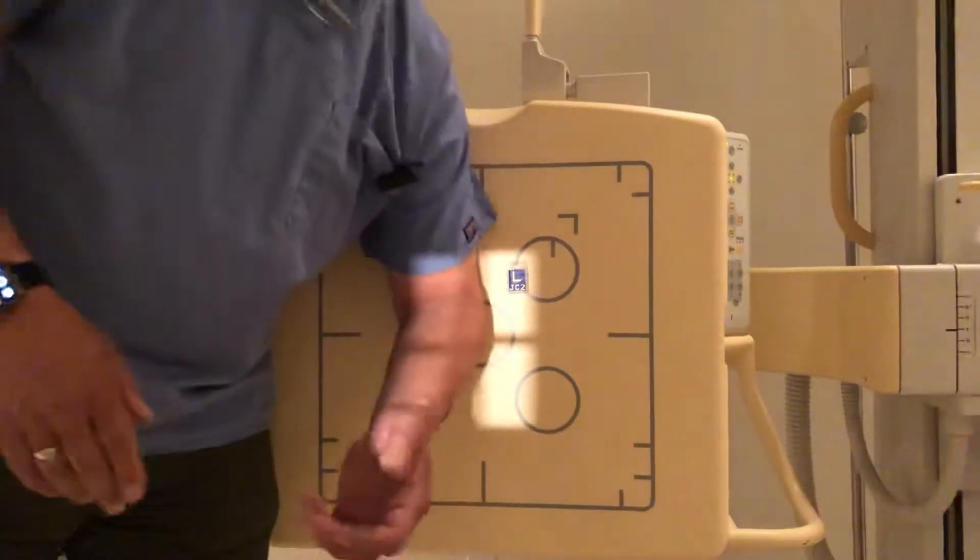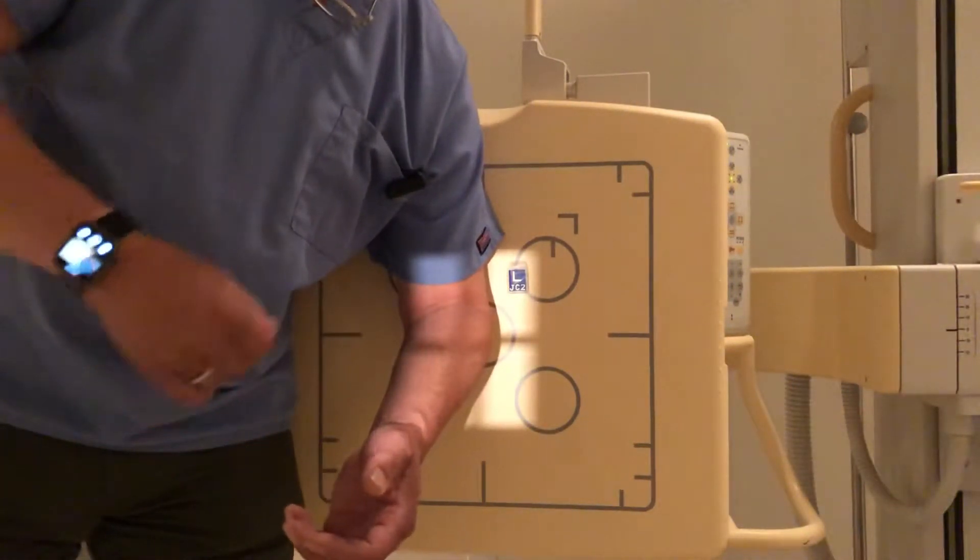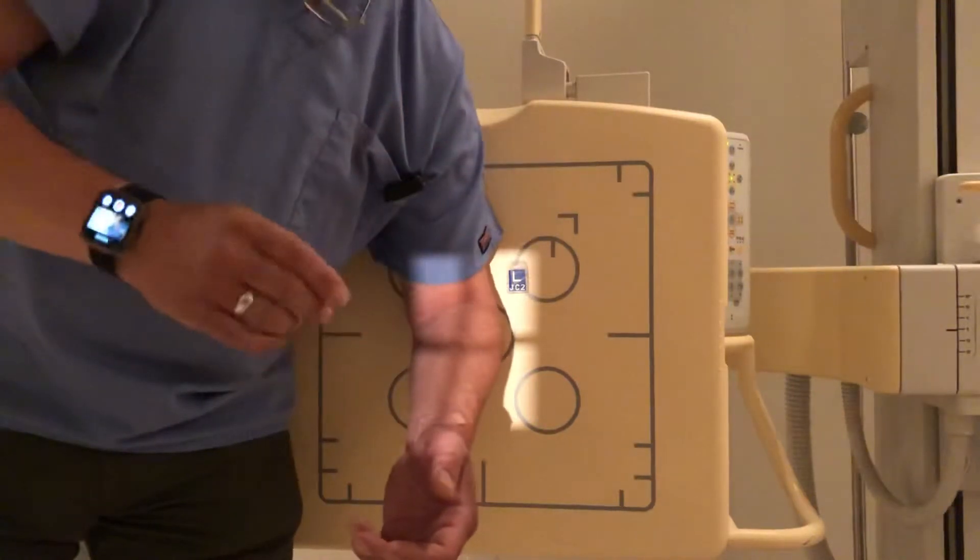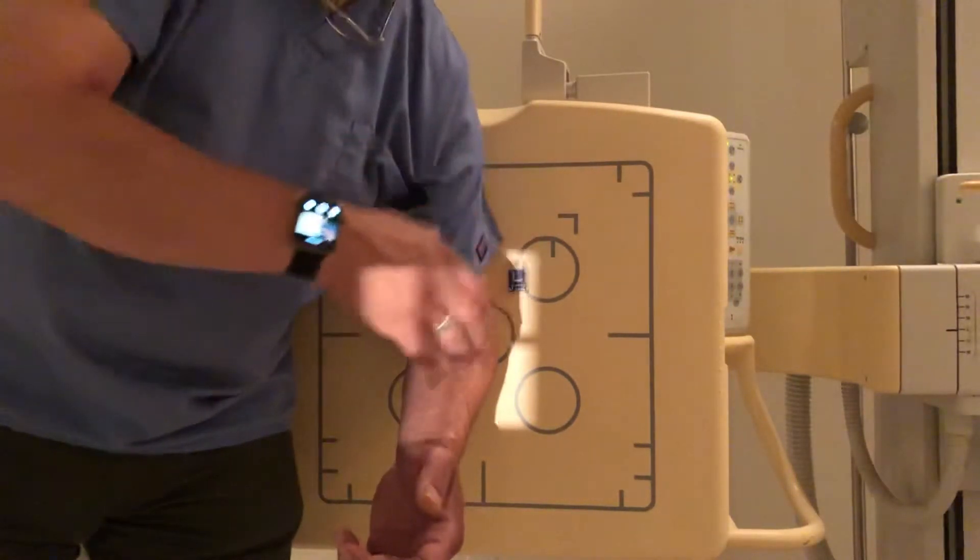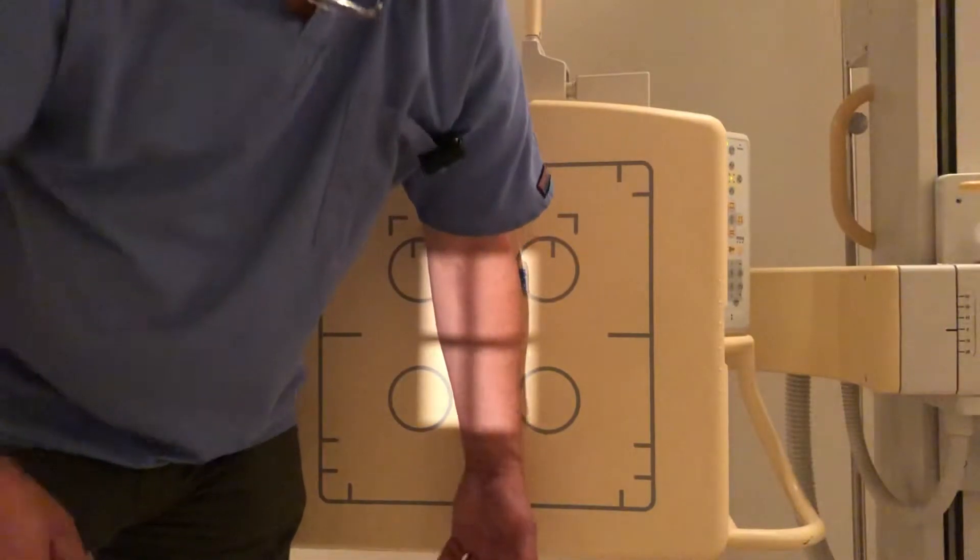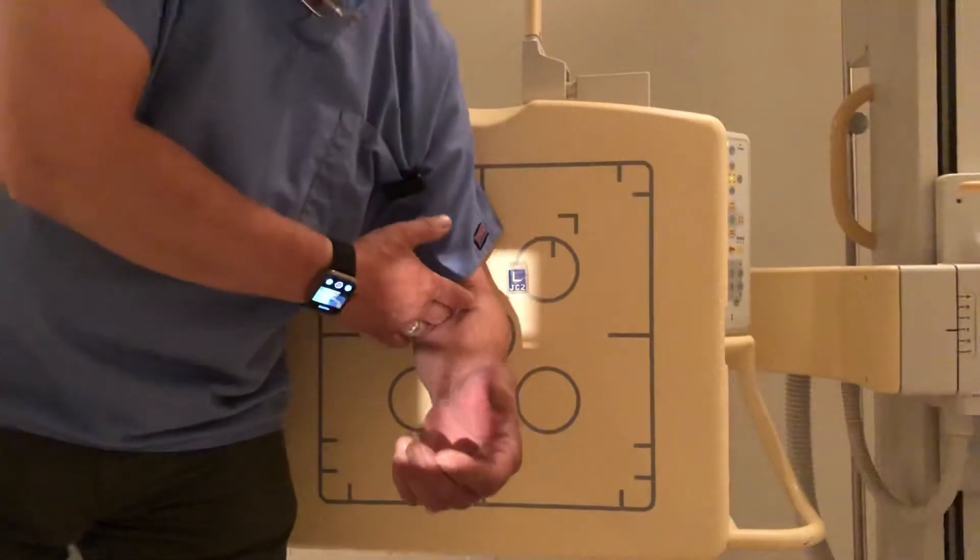Okay, so in this position when they're flexed, you're going to take two APs basically. You're going to take one of the humerus and then you're going to take one of the forearm. Distal humerus, proximal forearm.